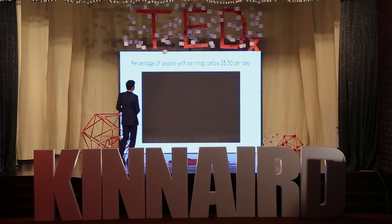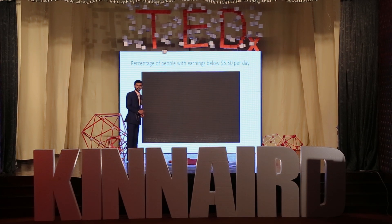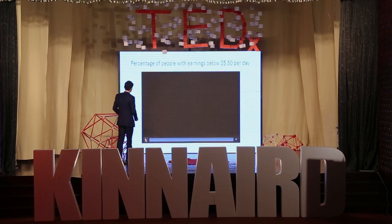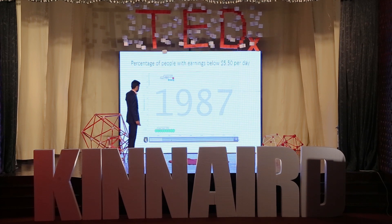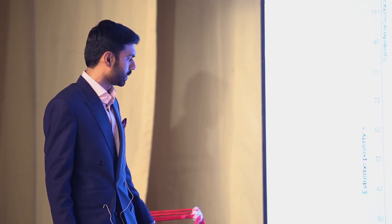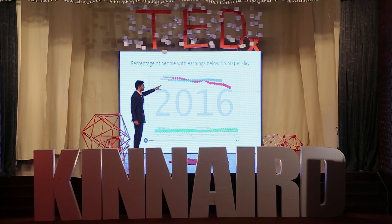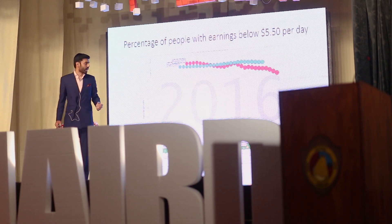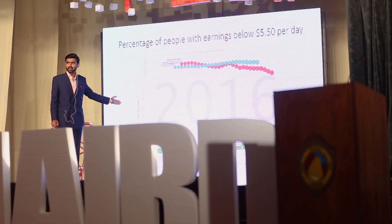Now let's look at the percentage of people earning below $5.50 per day and compare it with the developed world. On the y-axis we have poverty, on the x-axis we have time. The green circles at the bottom are the United States, the yellow circles are the United Kingdom — two developed countries. Pakistan and Nigeria are two developing countries shown above. About 80% of people in Pakistan earn less than $5.50 per day, compared to almost 0% in the United Kingdom and United States.